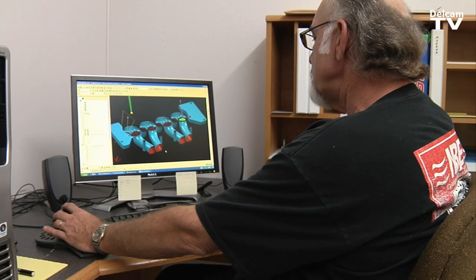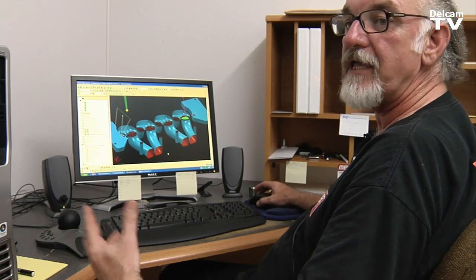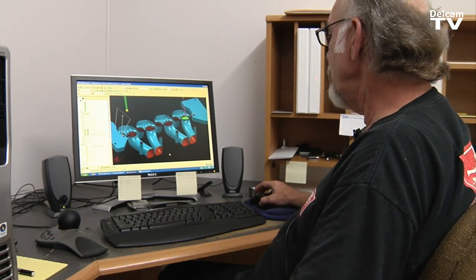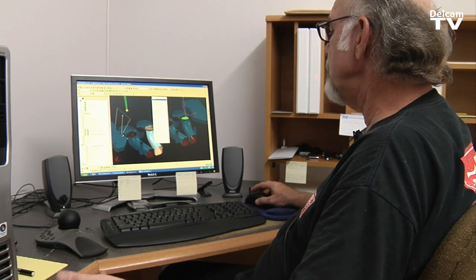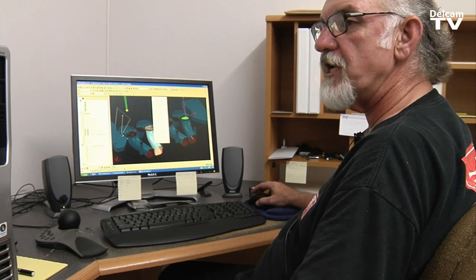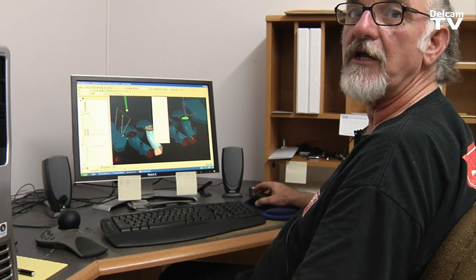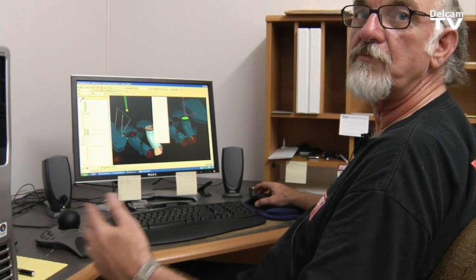Once you're in PowerMill, if you want to take data and move it from PowerMill back into PowerShape, it's still a Windows function. You can highlight an item, bring up copy, copy it, go back to PowerShape, and paste it right into PowerShape. So it's transparent between the two products.